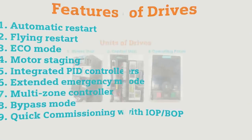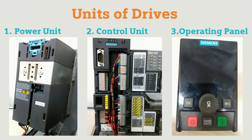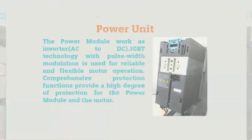Now we'll see the units of drives. Generally every drive has three types of units: power unit, control unit, and operating unit. Here you can see the Siemens G120 series AC drive. The first picture is for the power unit, the second is the control unit, and the last is the operating panel — this is the intelligence operating panel. We will see every unit in detail in the next slide.